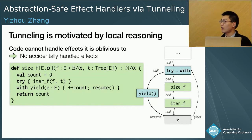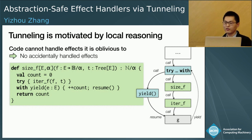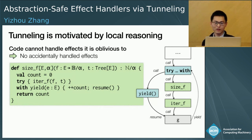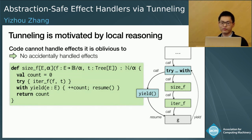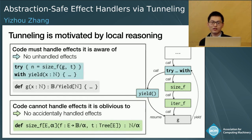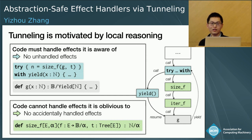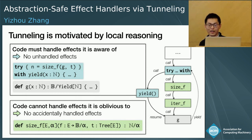This tunneling semantics is deeply motivated by modular reasoning. Because size_F is polymorphic in the effects of its functional argument F, the handler in size_F is locally oblivious to any effects F can raise. So it is impossible for size_F to accidentally handle any effects raised by F. By contrast, the client code is locally aware that applying G can raise yield, because the type of G says so. So the client code is obligated to provide a handler for yield, making unhandled effects impossible.